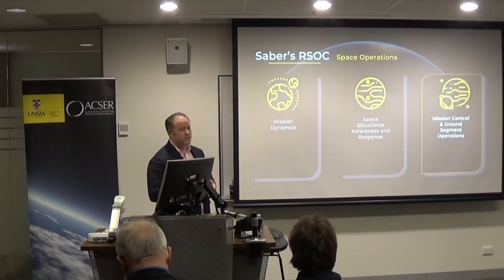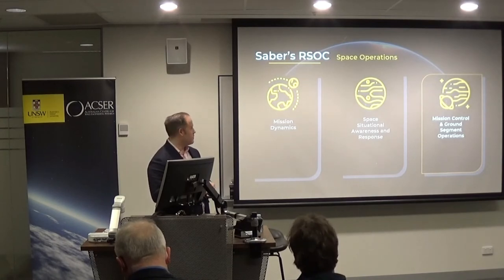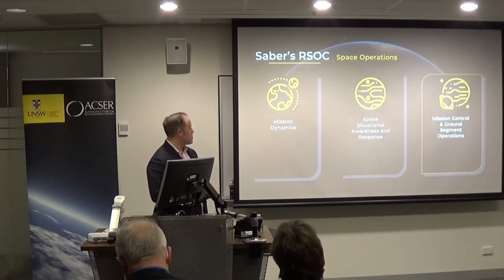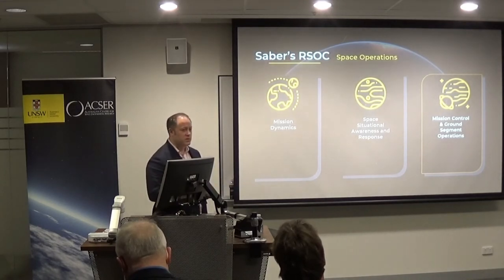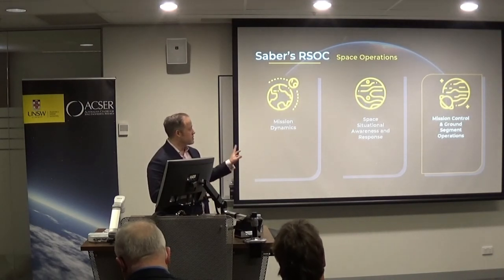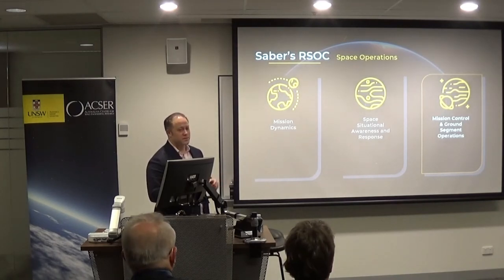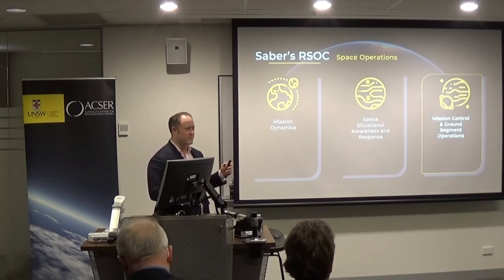Sabre has the RSOC — Responsive Space Operations Centre — which solves that. We have a whole range of capabilities including mission dynamics, orbit determination, conjunction assessments, and all the planning. We have space situational awareness and space traffic management responses. And then we have the mission control and ground segment. I'm not discussing the first two today, but we obviously need them and they're not included in the diagrams — so just imagine the diagram is about ten times more complex.